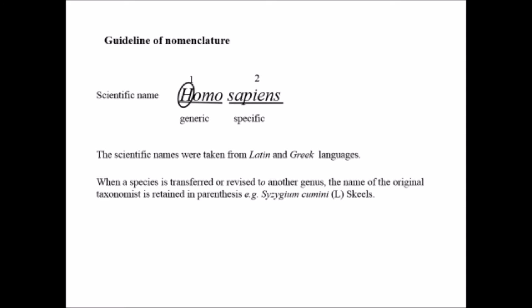When a species is transferred or revised to another genus, the name of the original taxonomist is written in parenthesis. For example, Solanum cumini - here L. and Skeels are the names of the original taxonomists.